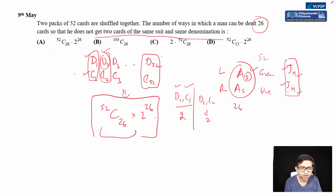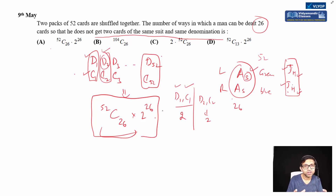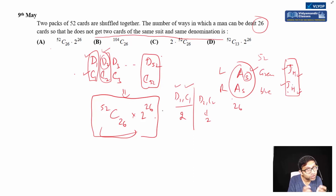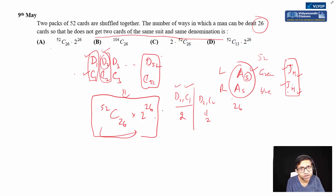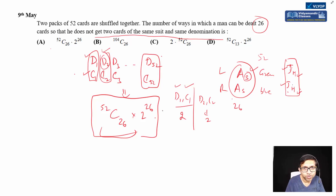This is essentially the same as the shoe question. Out of 52 cards in each pack, corresponding cards form a pair — green pack or blue pack, just like left shoe or right shoe. We form 52 pairs, select 26 pairs (52C26), and from each pair pick one card in two ways. Final answer: 52C26 × 2^26.